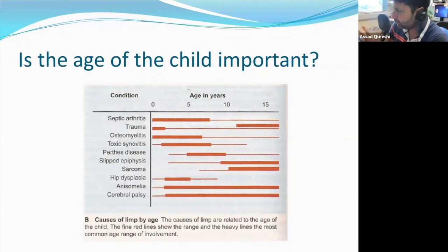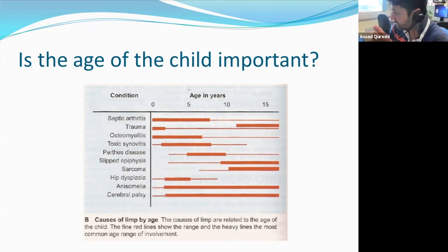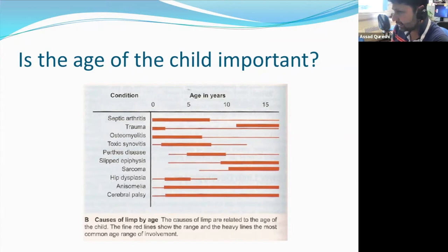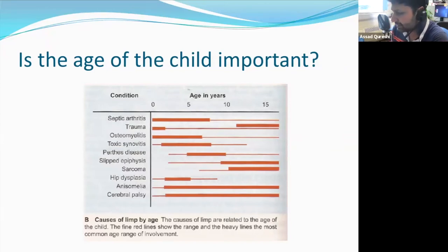I always think: what is the worst thing this child could have? We don't want to miss a fracture — that's usually the easiest to diagnose because there's a definite trauma history, deformity, and reliable investigations. Infection is more obscure — there is no gold standard investigation. Tumours are worrying but thankfully very rare. For tumours, infections, and fractures, timing of diagnosis has a massive bearing on outcome. The sooner we diagnose them, the more likely we are to have a better outcome.